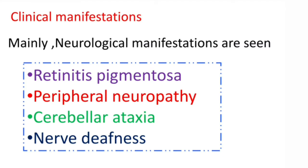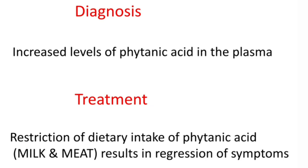Since alpha oxidation is important in the brain, a defect in alpha oxidation mainly shows neurological manifestations like retinitis pigmentosa, peripheral neuropathy, cerebellar ataxia, and nerve deafness. Coming to diagnosis, increased levels of phytanic acid in the blood indicate Refsum's disease.